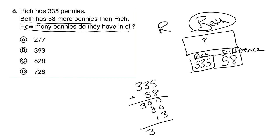So Beth has 393. And I want you to notice that they are trying to trick you because 393 is an option and that's not the correct answer because that's only how many Beth has, not how many they have together.